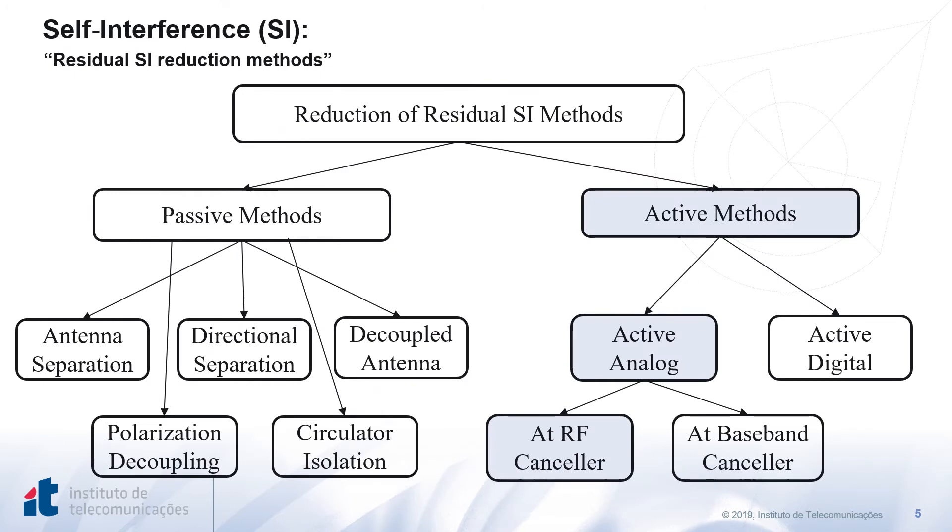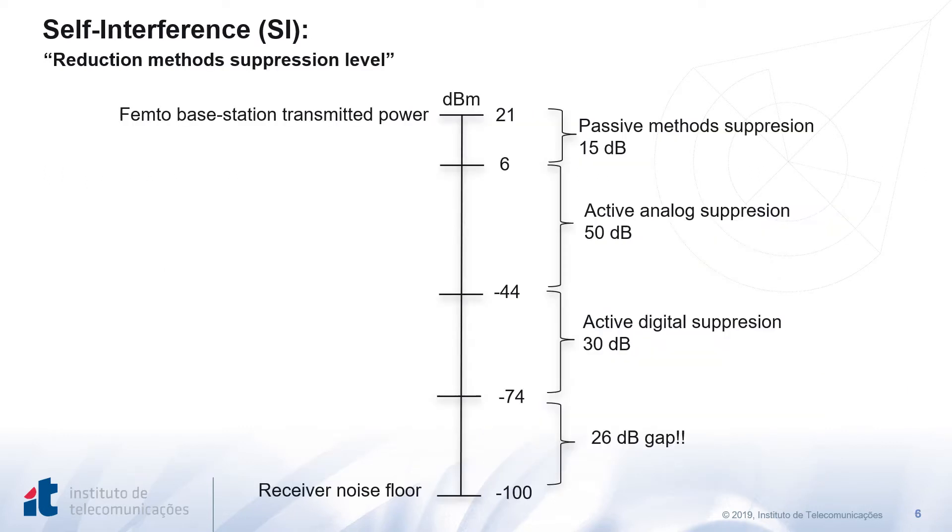The reduction of residual self-interference can be done using passive methods, which mainly depends on the physical characteristics of the antennas like spatial separation, or active methods, which depends on prior knowledge of the interference signal. In this work, we consider the active analog canceler at the analog carrier frequency. We consider the following example to show the suppression level of each reduction method. For instance, a femtocell base station transmits at 21 dBm power. The passive methods can suppress 15 dB. Active analog suppresses up to 50 dB, and active digital up to 30 dB, resulting in minus 74 dBm power, which is still 26 dB above the noise floor. This in turn motivates more research on optimizing the current reduction methods, or exploring new ones.